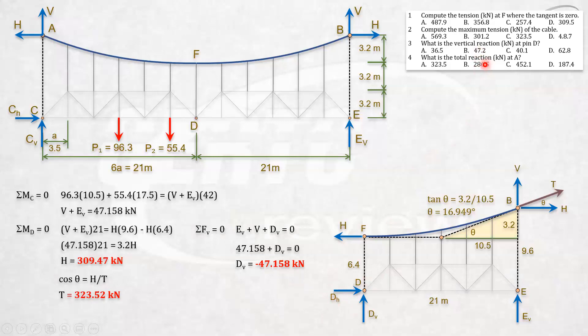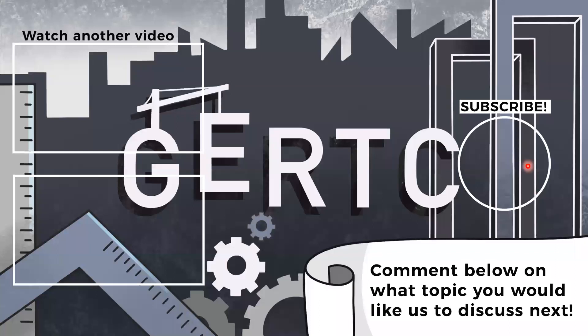Then the final question is the total reaction at A. The total reaction at A is actually the tension in the cable, and the tension is T, the same with the reaction at B. So the reaction at A is the tension also, and that is 323.5. So I hope you learned a lot from this video. Please, you can rewind the video if you have questions. So please don't forget to subscribe to our YouTube channel and click the bell icon so that you'll be notified every time we have a new video. Thank you so much. Bye-bye.